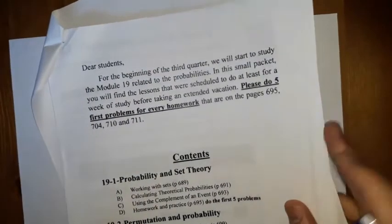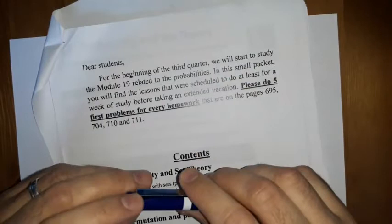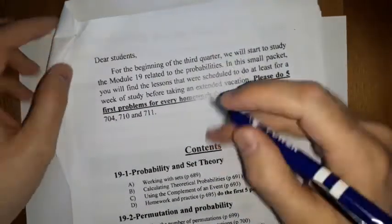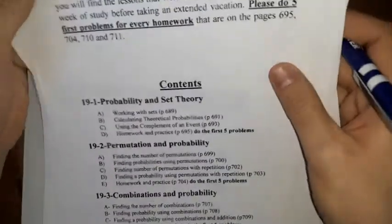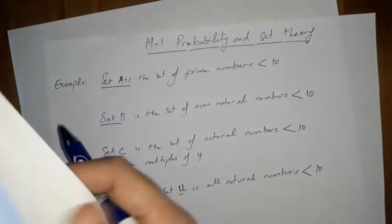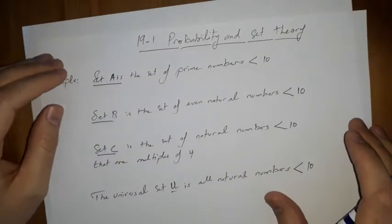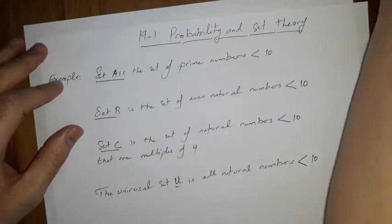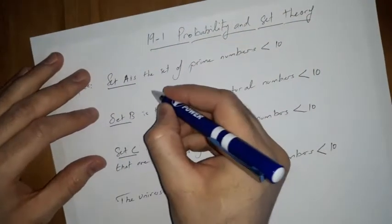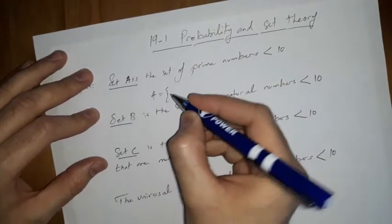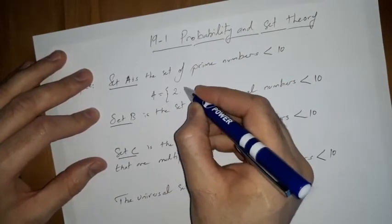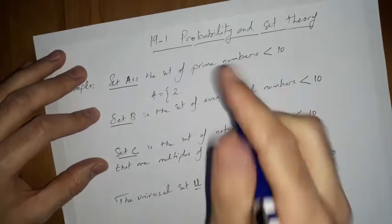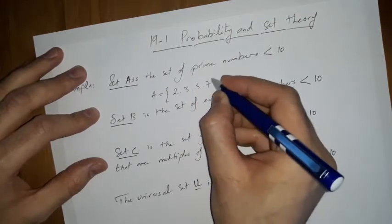Before talking about probability, we need to work with sets a little bit. A set is a collection of distinct objects — each object in a set is called an element. For example, let set A be the set of prime numbers less than 10. We can write A = {2, 3, 5, 7}.